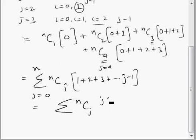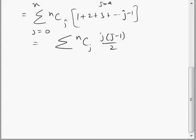j into j minus 1 divide by 2. So it is half summation j into j minus 1, nCj.